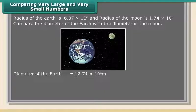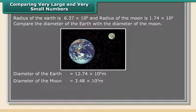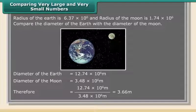The diameter of the Earth is equal to 12.74 × 10⁶ meters. The diameter of the Moon is equal to 3.48 × 10⁶ meters. Therefore, 12.74 × 10⁶ divided by 3.48 × 10⁶ is equal to 3.66.